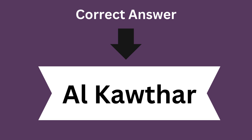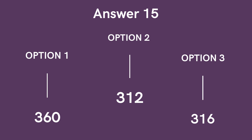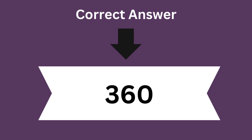Question 15: How many idols were worshipped in the Kaaba before the advent of Islam? Option 1: 360. Option 2: 312. Option 3: 316. And the correct answer is 360 idols.